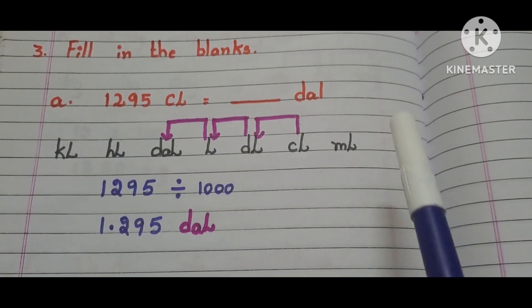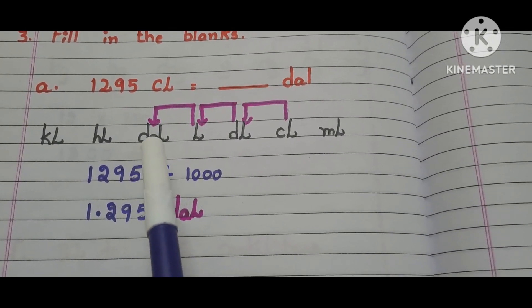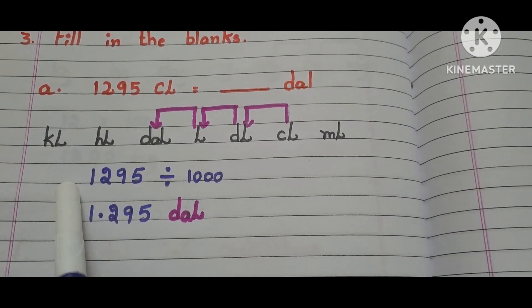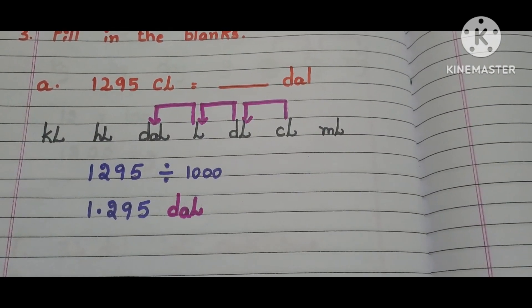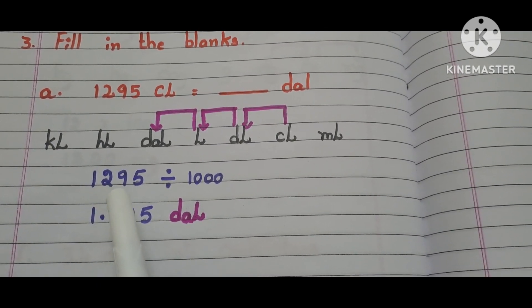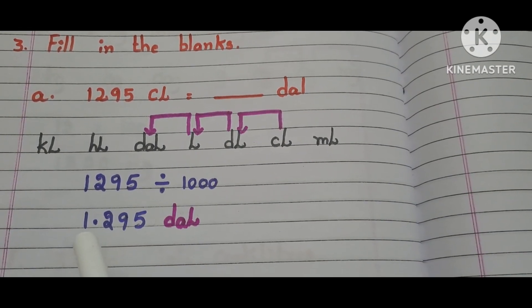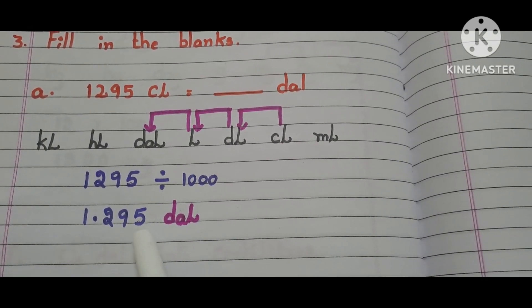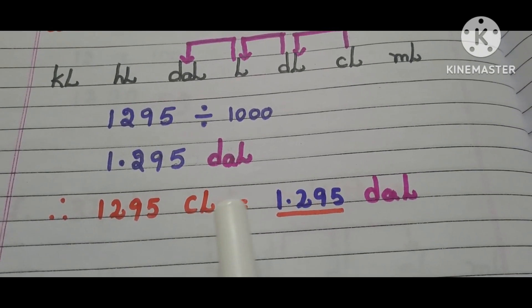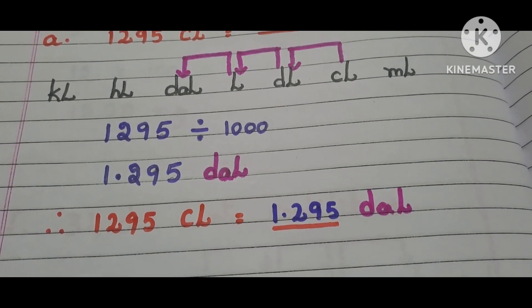Here we have the table. Where are centiliters in the table? Here it is. Where are decaliters? Here it is. So, we have to move from right side to left side 3 steps. So, we have to divide 1295 with 1000. Then it becomes 1.295. Therefore, 1295 centiliters is equals to 1.295 decaliters.